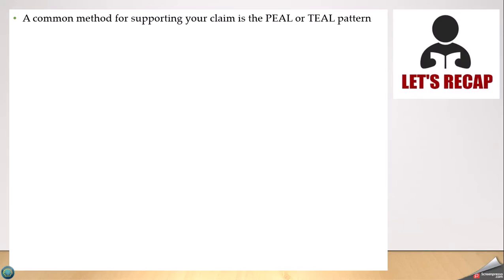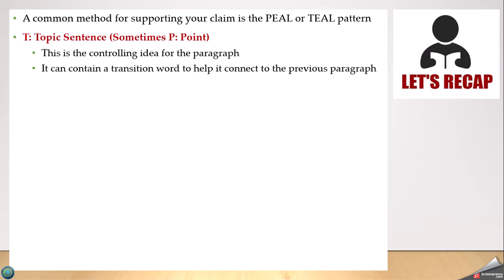A common method for supporting a claim is the PEEL or TEAL pattern. The T stands for topic sentence, sometimes P for point. This is the controlling idea for the paragraph. It can contain a transition word to connect it to the previous paragraph. Basically, it's showing your reader what the paragraph is going to be about.